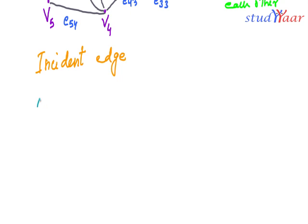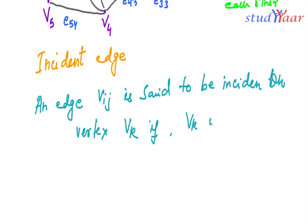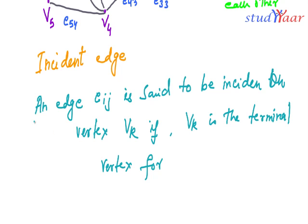Next we are looking at what is an incident edge. We define it like this: an edge eij is said to be incident on vertex vk if vk is the terminal vertex for eij. Note: it is eij, not vij.